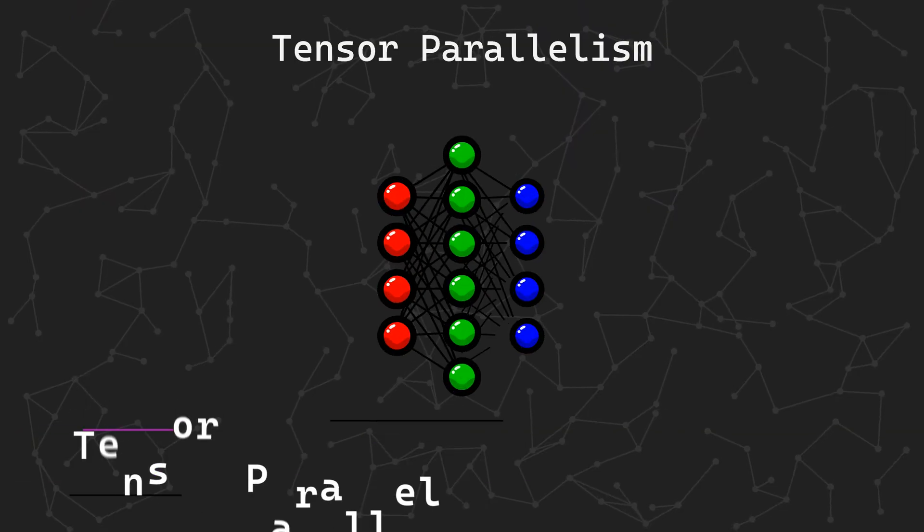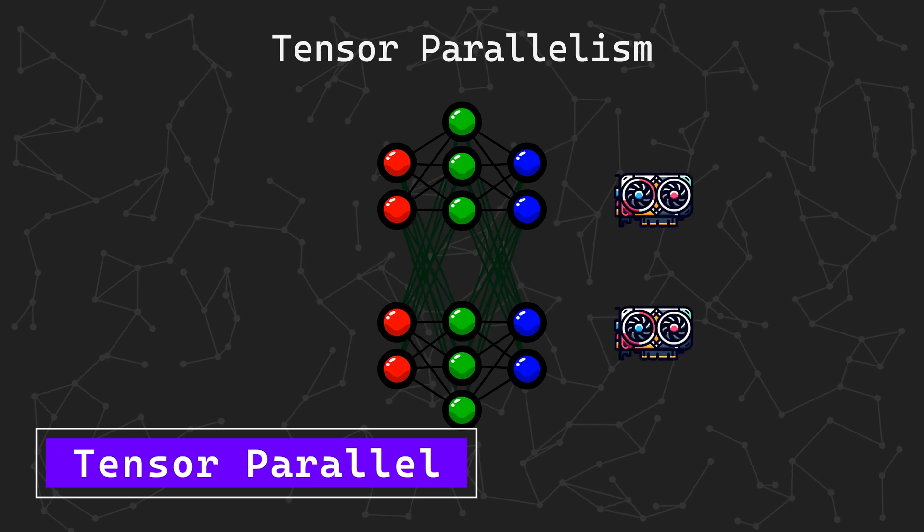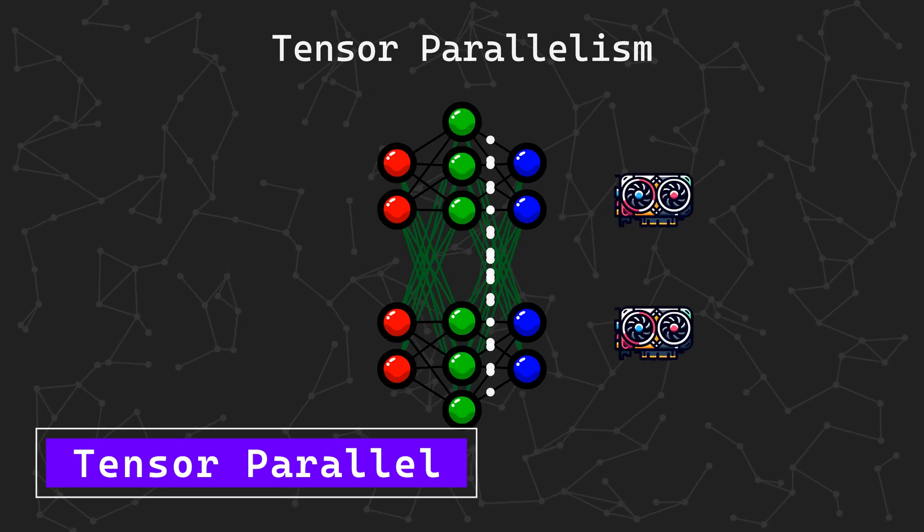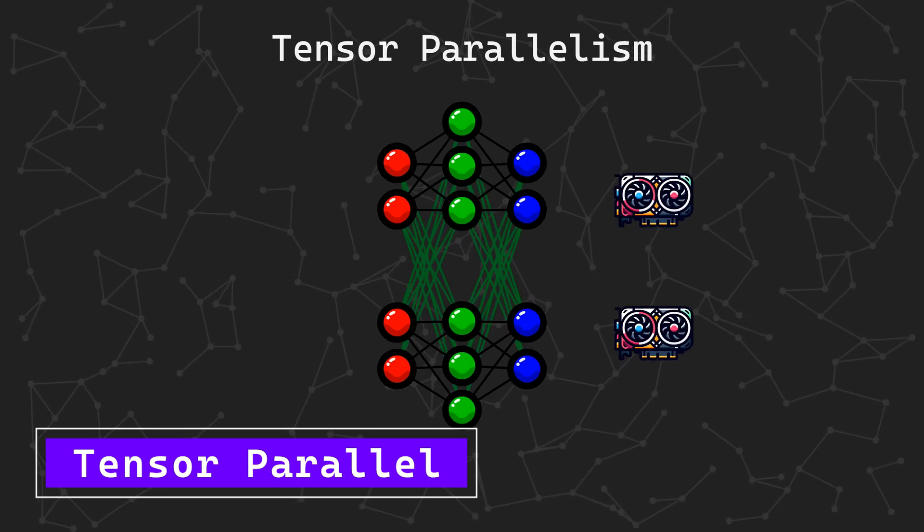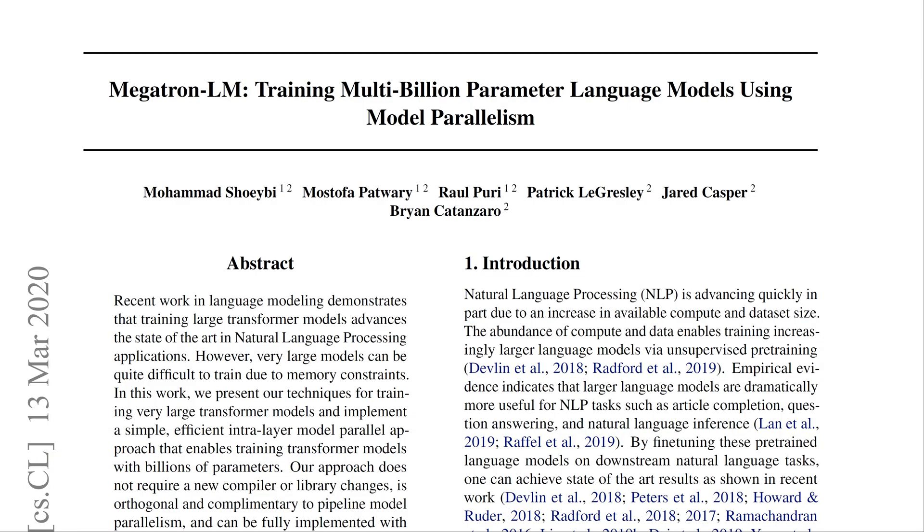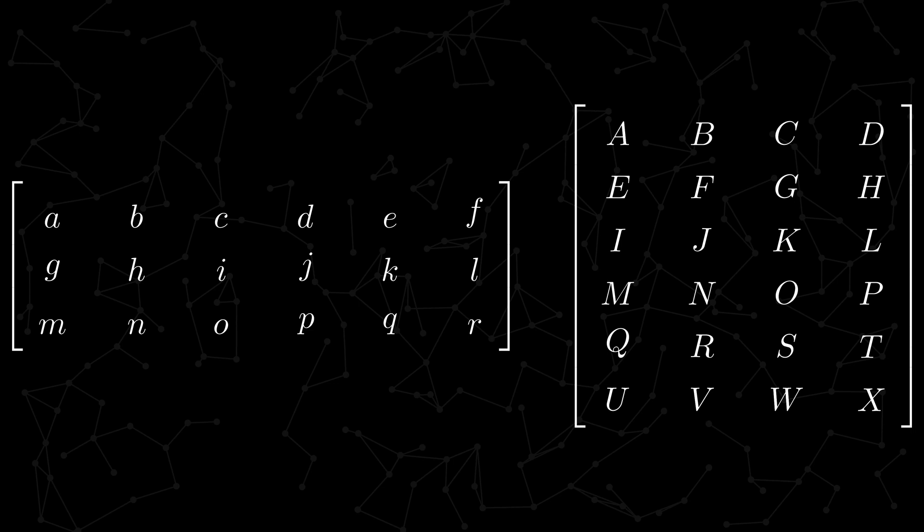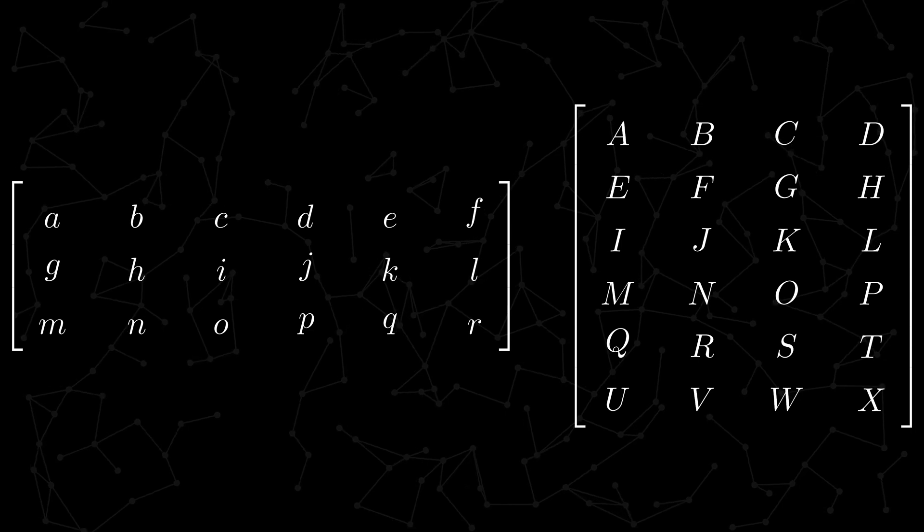You might be wondering to yourself. Since we cut the model vertically, what happens if we try to cut it horizontally? Well, then we have tensor parallelism. Tensor parallel was originally introduced by the Megatron paper. To understand how this works under the hood, we need to dive down to the matrix multiplication level.